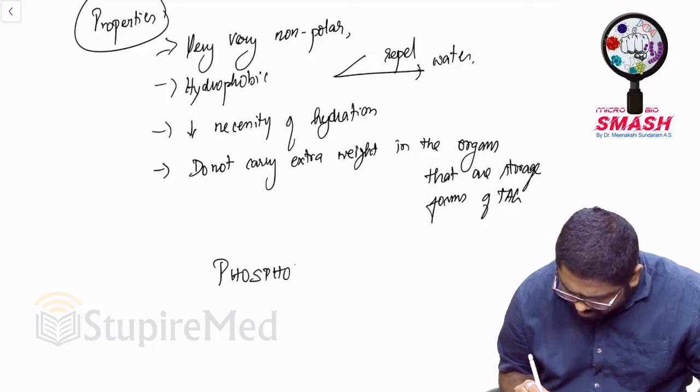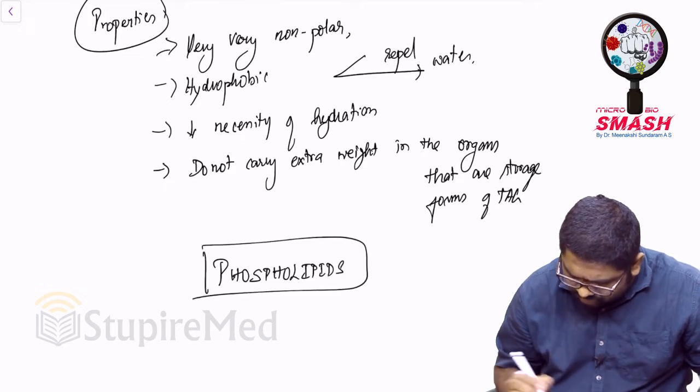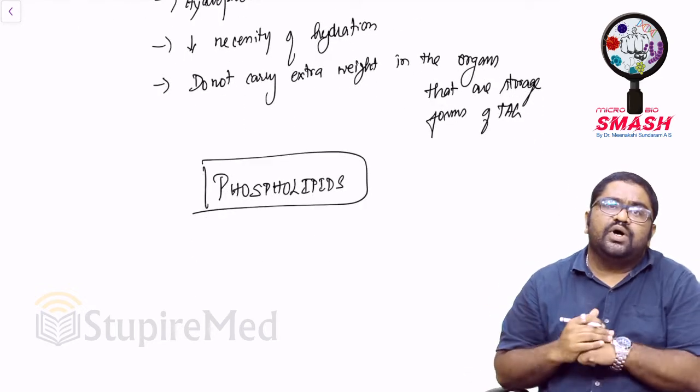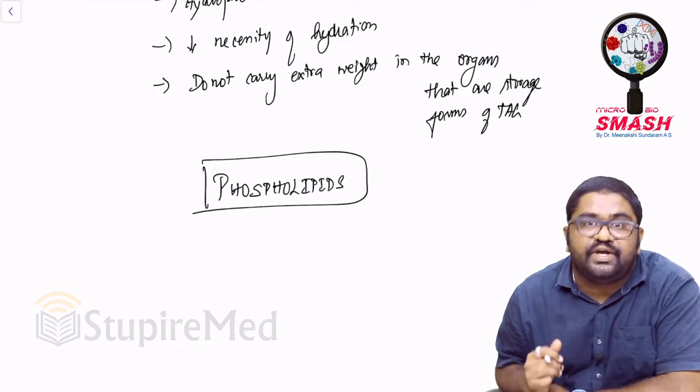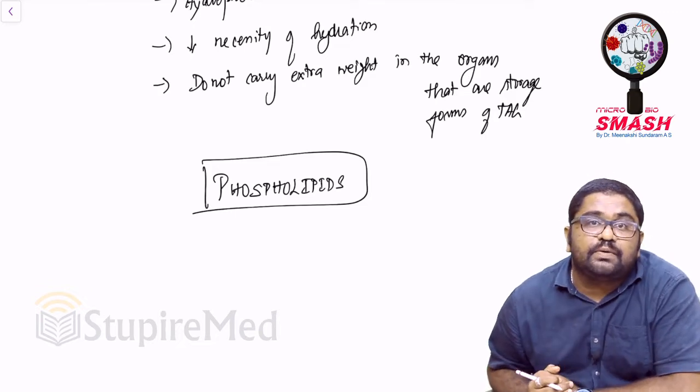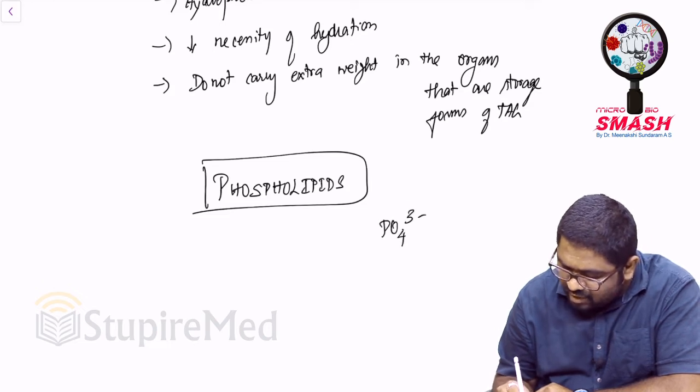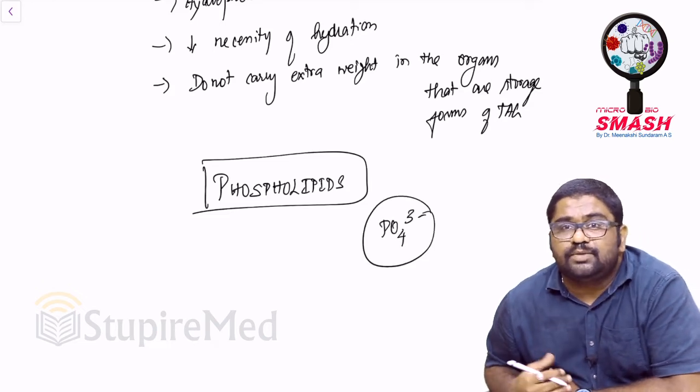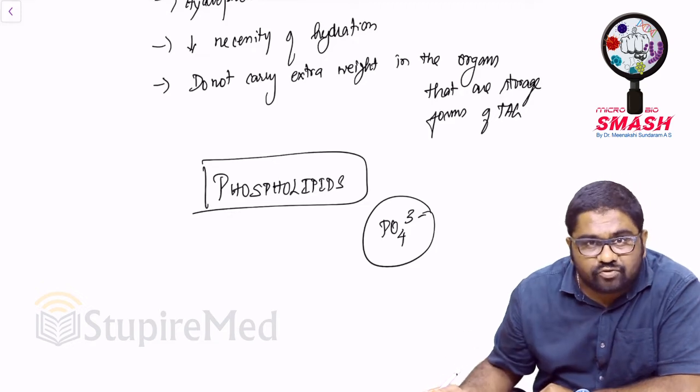Phospholipids are derived from triacylglycerol but are a different world altogether. They require an important component called phosphate, and that phosphate is capable of adding polarity to them because phosphate has a charge, PO4 minus.